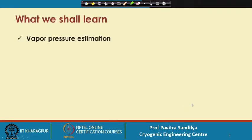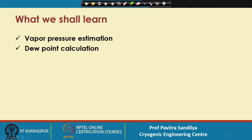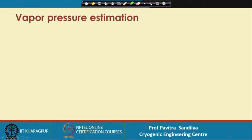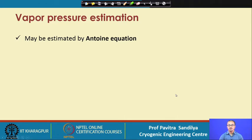In this lecture we shall first be learning the vapor pressure calculation, because vapor pressure is needed in the calculation of the dew point and bubble point temperature or pressure. Then we shall go to dew point calculation and then bubble point calculation. First, the vapor pressure estimation. There are many correlations which have been developed to estimate the vapor pressure, and these correlations are based on experimental data.